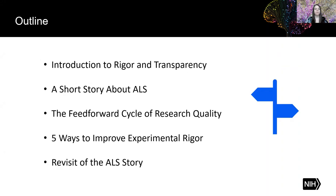Here is an outline of the presentation. It will serve as a roadmap for where we will be going. First, I will give an introduction to rigor and transparency, and then I will tell a short story about ALS, and then we'll talk about the feed-forward cycle of research quality and the five ways to improve experimental rigor, and then we will revisit the story of ALS.